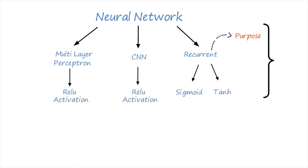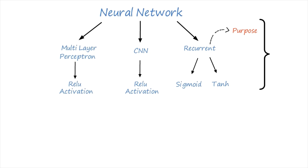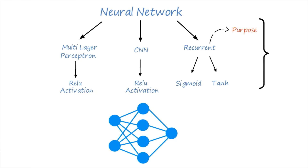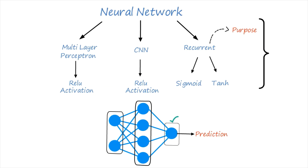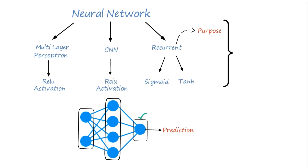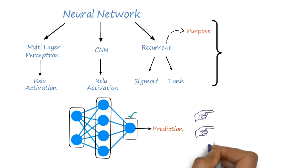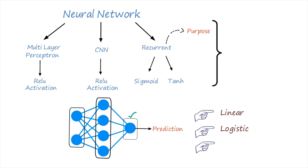We can also use activation functions for the output layer. The output layer directly outputs the prediction, and all feed-forward neural network models have an output layer. There are three kinds of activation functions for the output layer: linear activation function, logistic or sigmoid activation function, and softmax activation function.